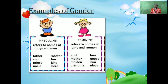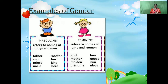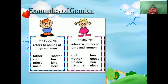Feminine gender is completely different from masculine gender. The feminine gender refers to the names of girls and women. For example, aunt, mother, madam, grandma, niece, nun, goose, hen. These are some nouns which are called feminine genders.